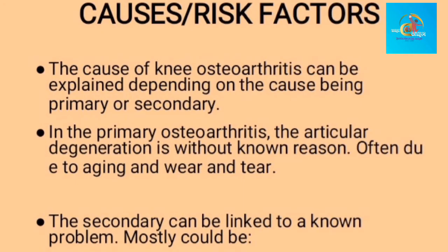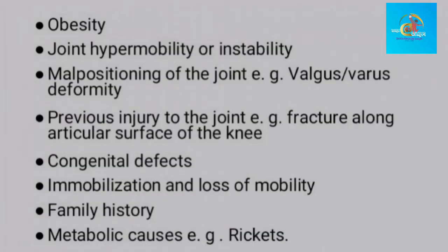The cause of knee osteoarthritis can be explained depending on whether it is primary or secondary. In primary osteoarthritis, the articular cartilage degeneration is without a known reason — often due to aging and wear and tear. Secondary osteoarthritis can be linked to known problems such as obesity, joint hypermobility or instability, malpositioning of the joint (e.g., valgus and varus deformity), previous injury to the knee joint such as fracture along the articular surface, congenital defects, immobilization, loss of mobility, family history, and metabolic causes such as rickets.